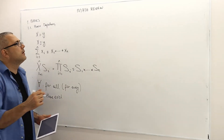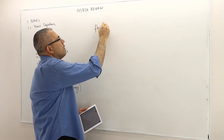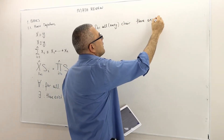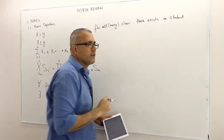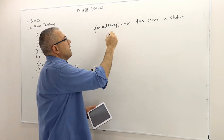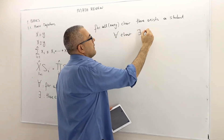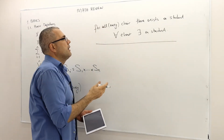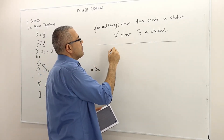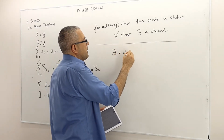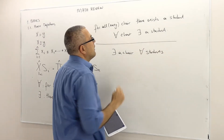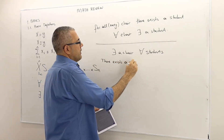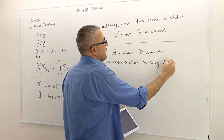And just one example. For all, or for every chair, there exists a student. A more formal way is: for every chair, there exists a student. And somewhat related to this sentence is: there exists a chair for all students, or in words: there exists a chair for every student.